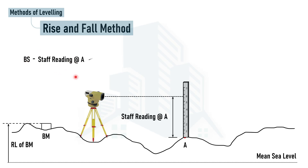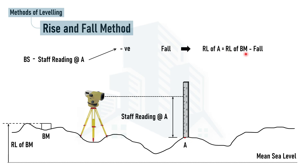If we subtract the staff reading at point A from the back sight reading and it comes out negative, it means there is a fall. Since point A is lower than the benchmark, the staff reading at point A is higher than the back sight reading, making the difference negative — indicating a fall, as shown in the visual representation.